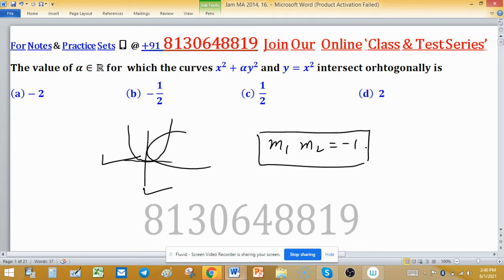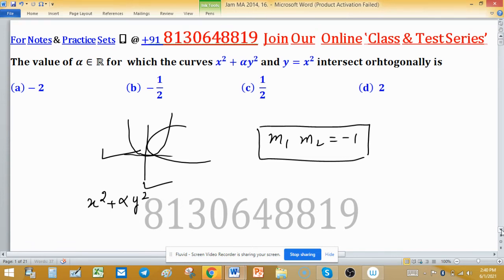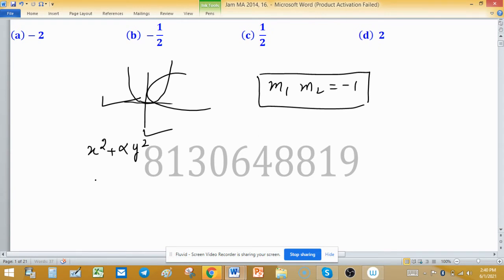To find the solution or value of alpha, the first curve is x² + αy². Differentiate with respect to x to find its slope: 2x + 2αy(dy/dx) = 0.